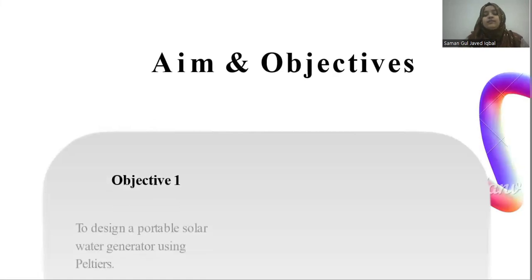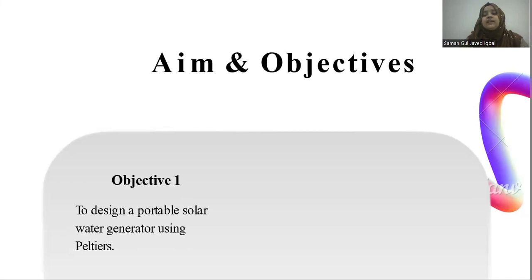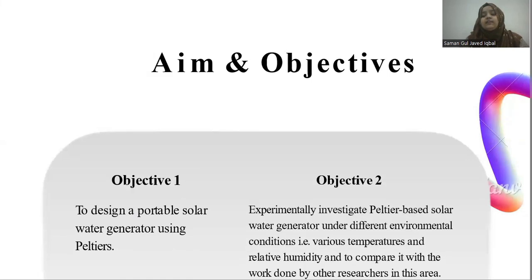Our first objective is to design a portable solar water generator using Peltiers. The second objective is to experimentally investigate the Peltier-based AWG under different environmental conditions — for example, with various temperatures and relative humidity levels — and to compare it with the work done by other researchers in this area.